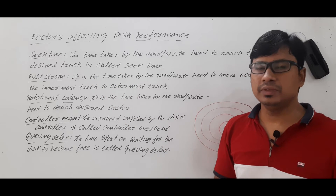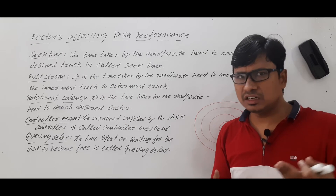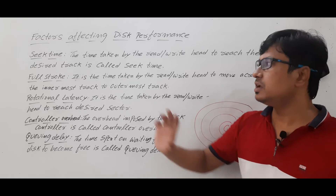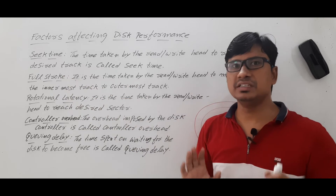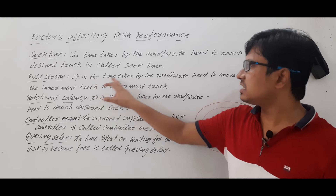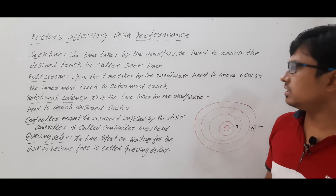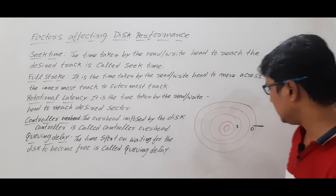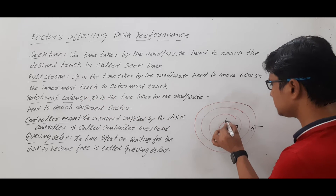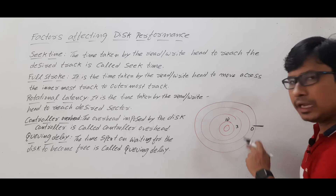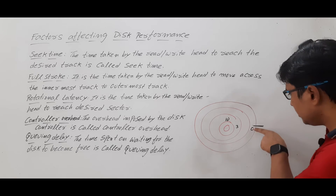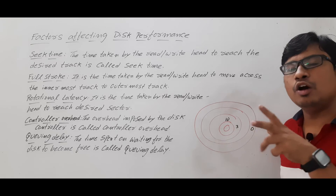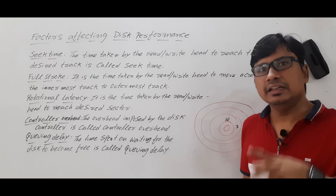Sometimes in numerical questions, if seek time is not given but full stroke time is given, you need to know how to compute seek time. Full stroke time is the time taken by the read-write header to move from the innermost track to the outermost track, or vice versa. For example, if the innermost track is track number 10, the full stroke time is how long it takes to travel from the outermost track to the innermost track.